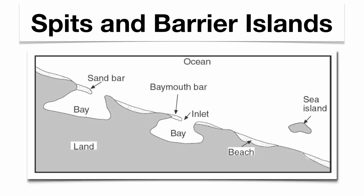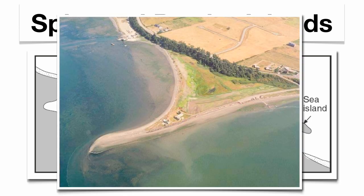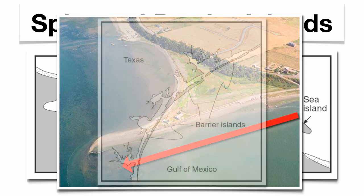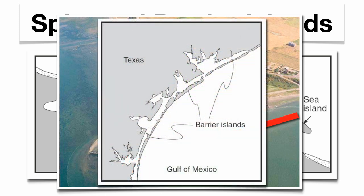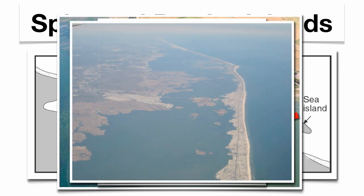Here's a regions diagram showing spits and barrier islands. Spits act like a finger — they're telling you that the wave direction is from left to right across this picture. Here's an actual photograph of a spit showing the direction of motion. Here's a barrier island regions diagram off the coast of Texas, and here's an actual photograph off the coast of New Jersey. You can see the narrow strip — you usually need a bridge to get there, but essentially you're looking at a barrier island.